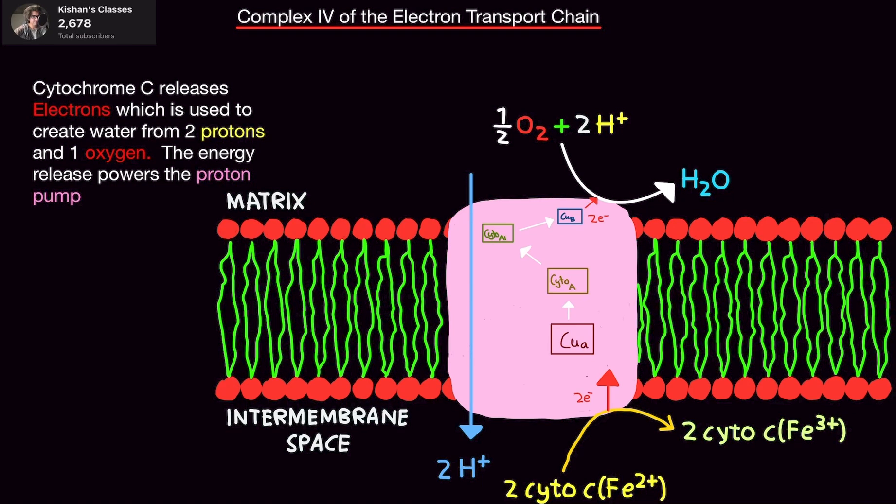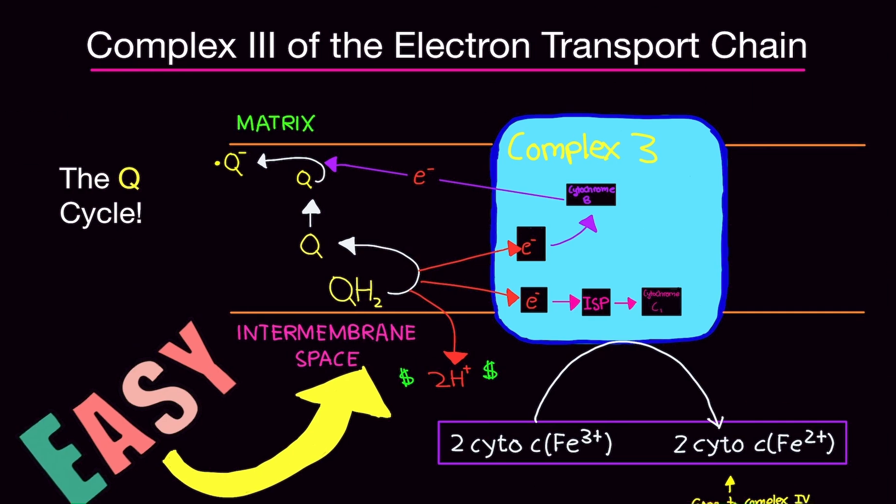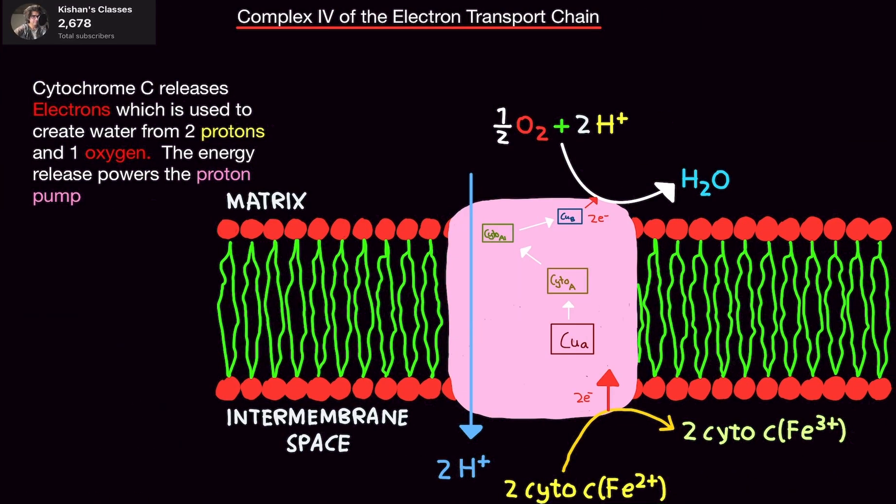All right, welcome back, and this is where we're going to go over Complex IV of the electron transport chain. In the last video, Complex III, I mentioned that an electron from ubiquinol goes on to cytochrome C and basically will go to Complex IV, and that is exactly what happens.